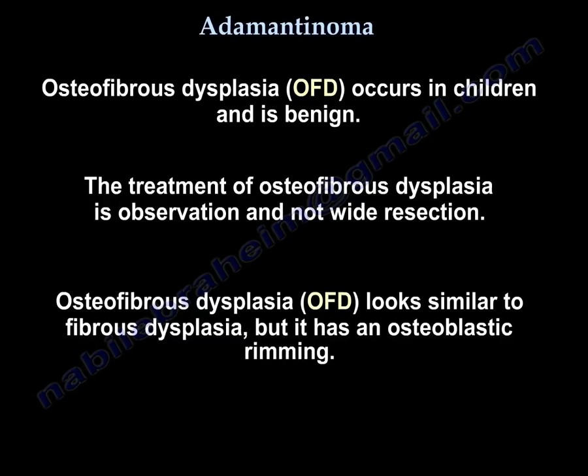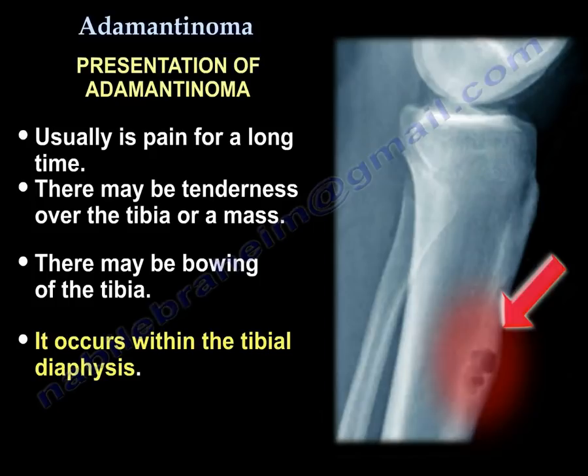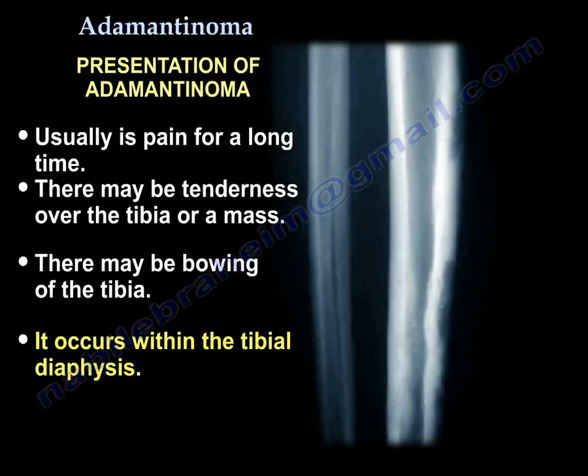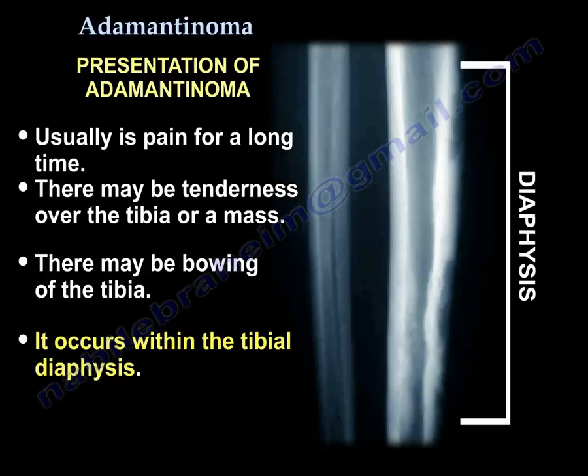The presentation of Adamantinoma usually is pain for a long time. There may be tenderness over the tibia, and there might be a mass, but there also may be bowing of the tibia. The key point is that it occurs in the tibial diaphysis.